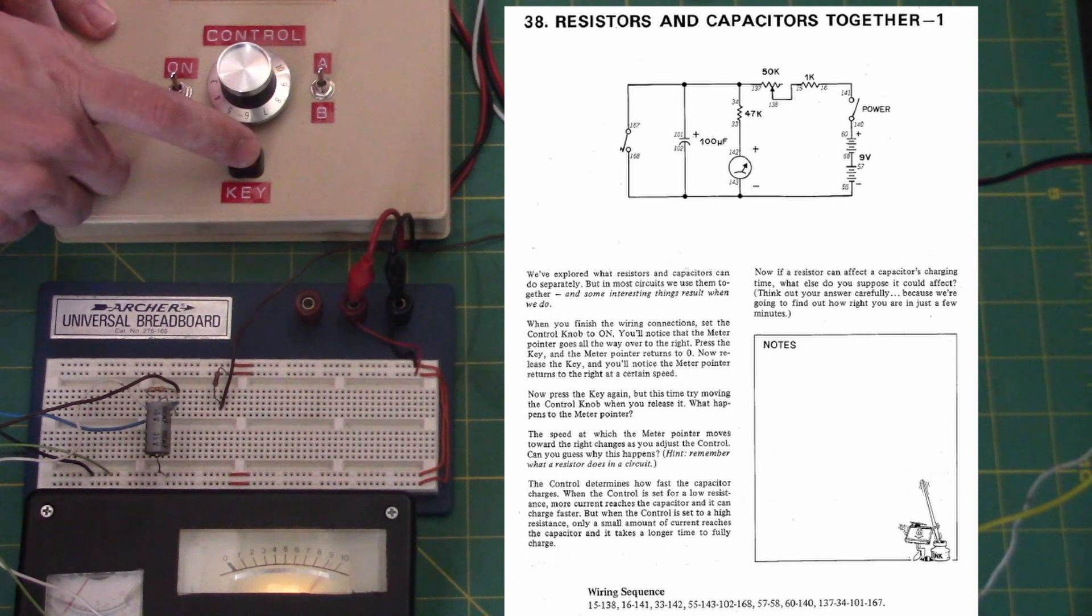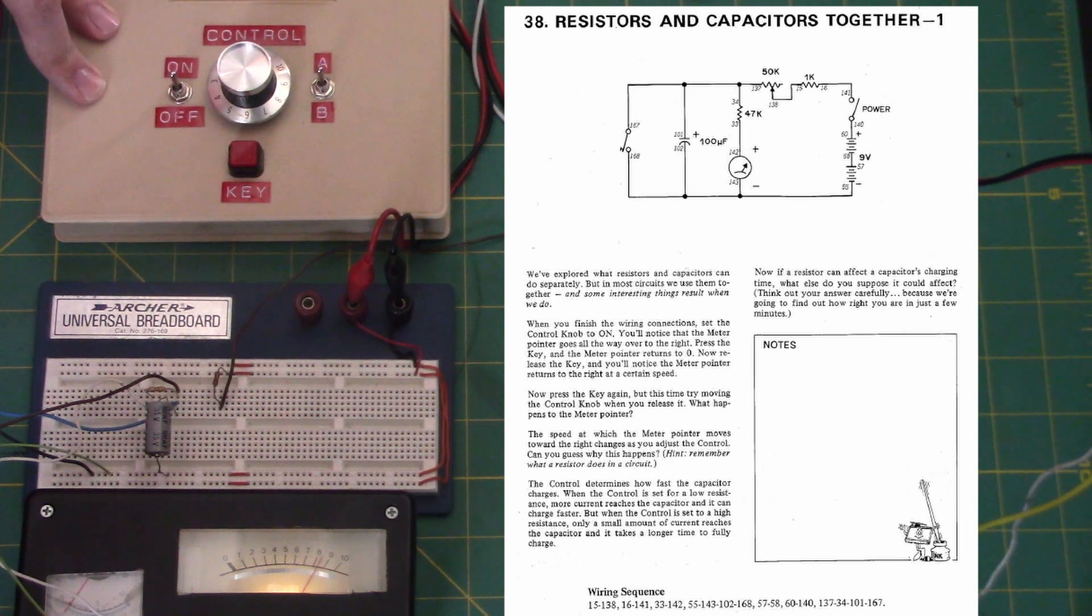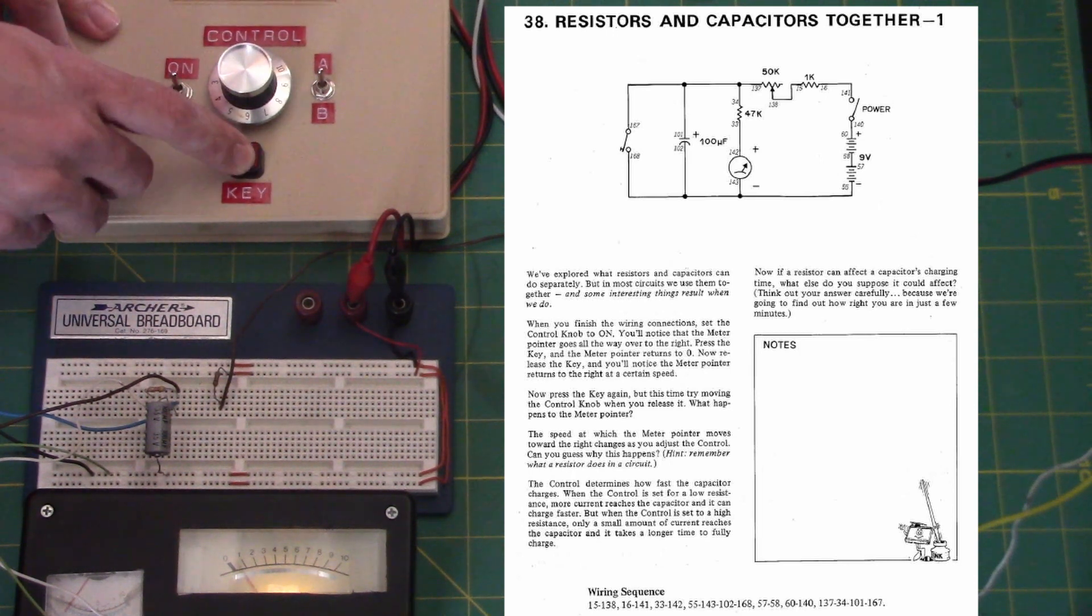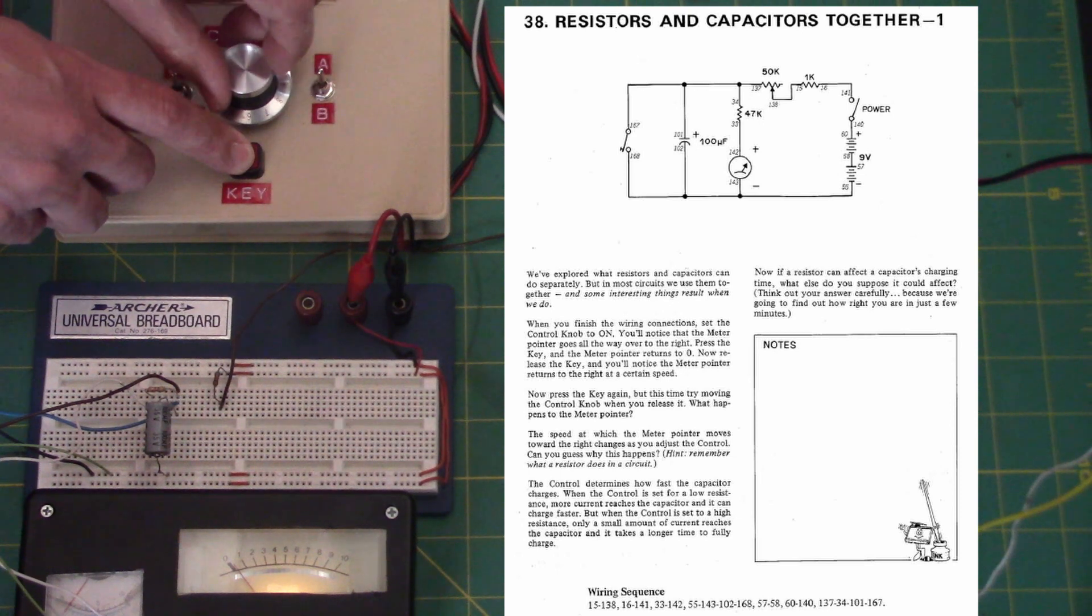Now release the key and you'll notice the meter pointer returns to the right at a certain speed. Now press the key again, but this time try moving the control knob when you release it.